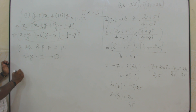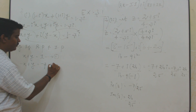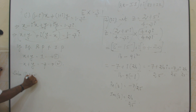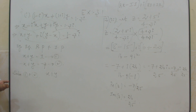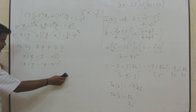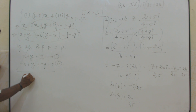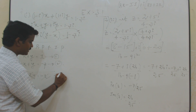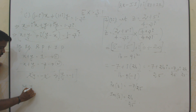The imaginary part gives y minus x, which can be written as minus x plus y, which is equal to minus 3. Call this equation number 2.